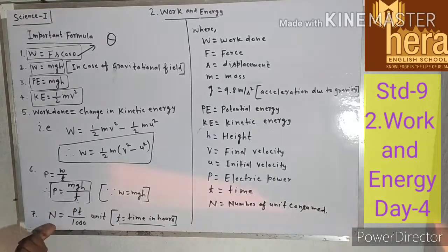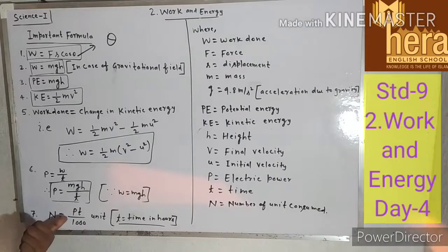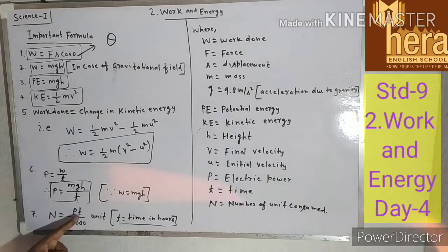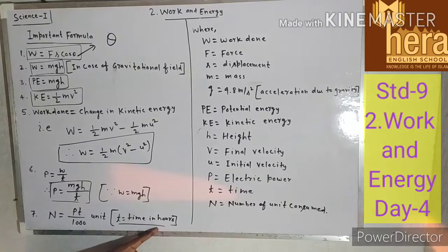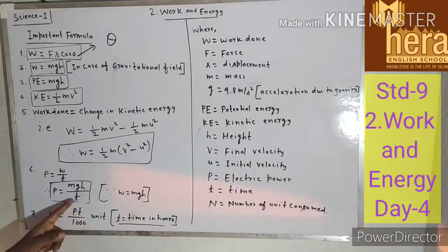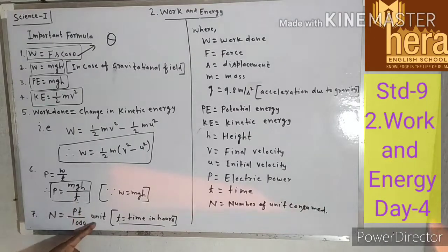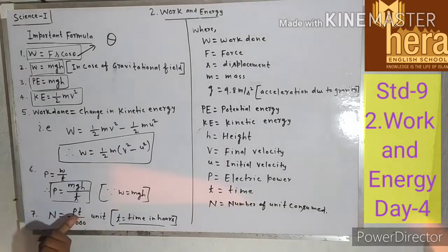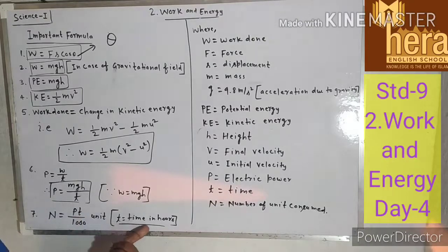N = PT/1000 units, where N is the number of units consumed. Remember, in this formula T is in hours, not seconds. Whenever we solve numericals using this formula, you have to put time in hours.